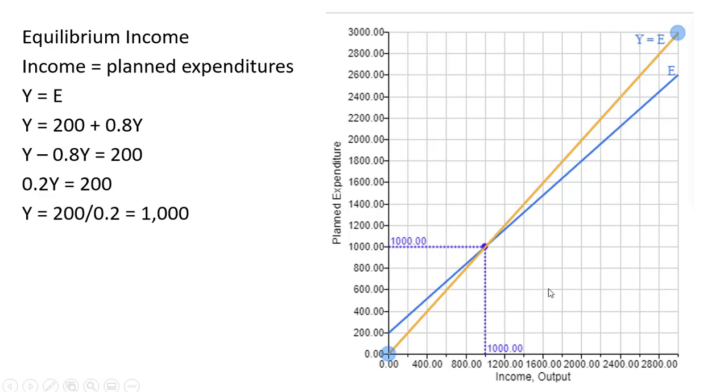So when income is 1,000, planned expenditure coming from consumers, coming from business investment, and government purchases also equals 1,000. All right, I'll stop here.